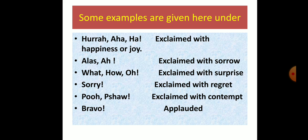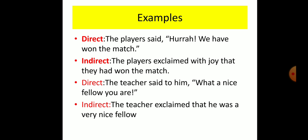For words like 'hurrah' and 'ah,' instead of those we write 'exclaimed with happiness or joy.' 'Alas' or 'oh' are omitted and we write 'exclaimed with sorrow.' For 'what' or 'how' or 'oh,' we write 'exclaimed with surprise.' For 'sorry,' we write 'exclaimed with regret.' For 'boo,' we write 'exclaimed with contempt,' and for 'bravo' we write 'applauded.'